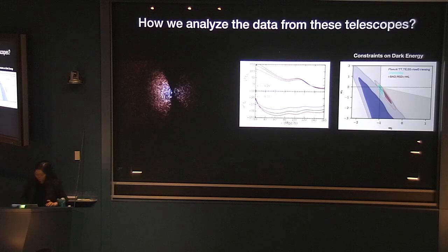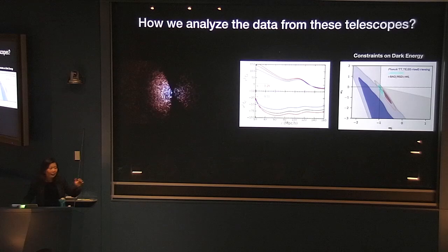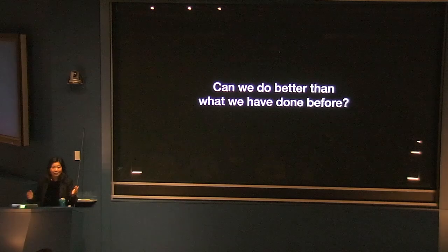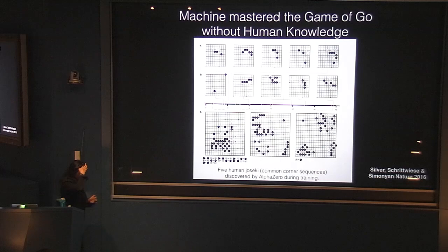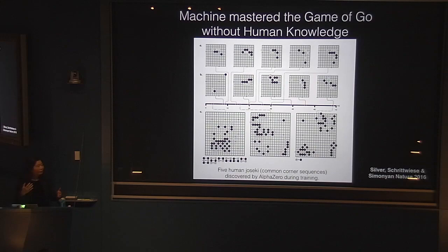Can I do better than what we've done before? I got tenure at Carnegie Mellon doing this kind of work, placing constraints on dark energy. Then I said, can I do something different? Carnegie Mellon is very good at machine learning. I met friends at parties who told me about machine learning — that was around 2011-2012. I was skeptical. It wasn't really working in 2011; 2012 was when it started to work. We did a bunch of work and realized nothing really worked — training was really slow.